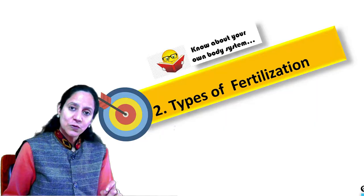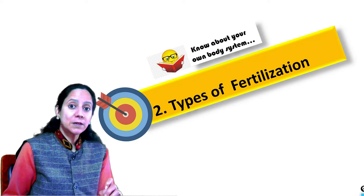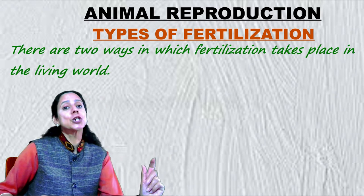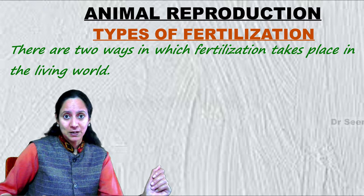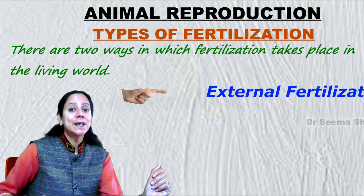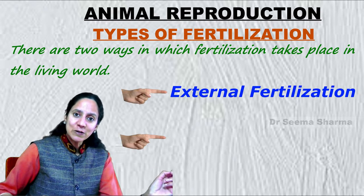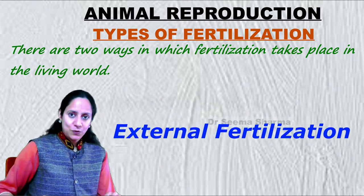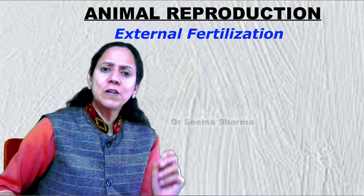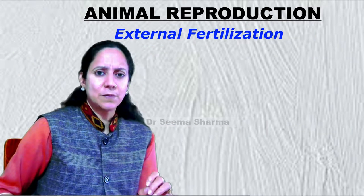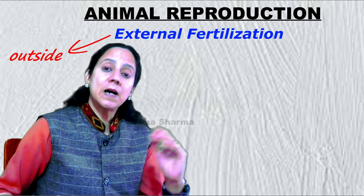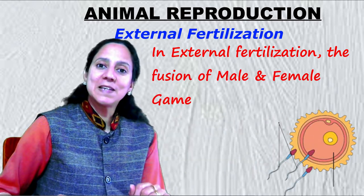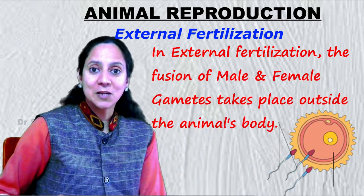Now let's move on to our second objective: the types of fertilization. There are basically two methods by which fertilization takes place in living organisms — external fertilization and internal fertilization. In external fertilization, the fusion of male and female sex cells takes place outside the animal's body.